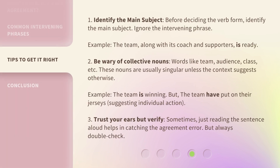Tip 1: Identify the main subject. Before deciding the verb form, identify the main subject and ignore the intervening phrase. Example: 'The team, along with its coach and supporters, is ready.'